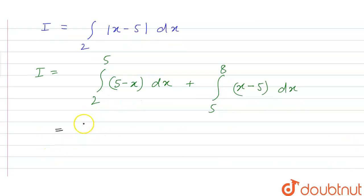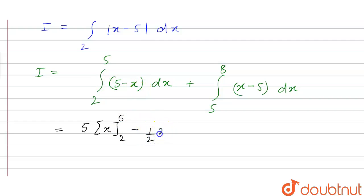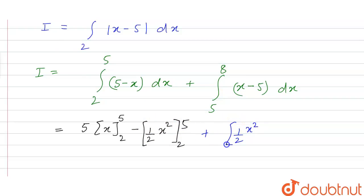On solving this, from limit 2 to 5 the integration of x gives x²/2, with limit from 2 to 5. Similarly, from the second part, the integration of x gives x²/2 with limit 5 to 8, minus 5 times x with limit 5 to 8.